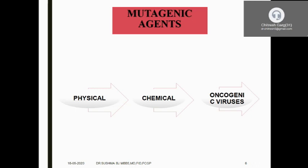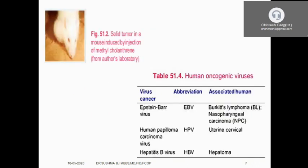Chemical agents — for example, benzopyrene — can cause chemical damage to DNA by forming adducts. The chemical gets inserted into the DNA, resulting in DNA adduct formation. There are also oncogenic viruses that cause mutations leading to cancers. Methylcholanthrene, when injected into mice, could develop solid tumours, providing direct evidence that some chemicals are carcinogenic.